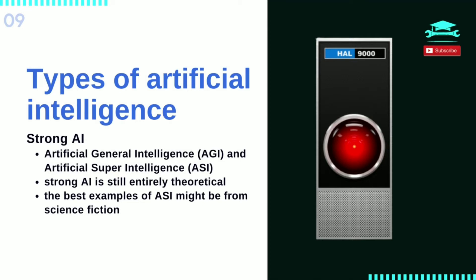Artificial general intelligence, or general AI, is a theoretical form of AI where a machine would have an intelligence equal to humans — a self-aware consciousness with the ability to solve problems, learn, and plan for the future. Artificial super-intelligence would surpass the intelligence and ability of the human brain. Strong AI is still entirely theoretical with no practical examples in use today, but that doesn't mean AI researchers aren't also exploring its development.